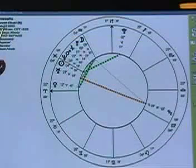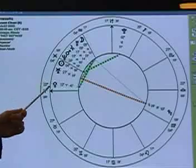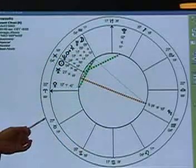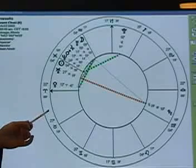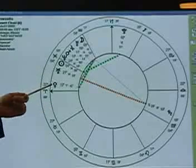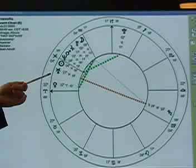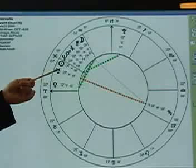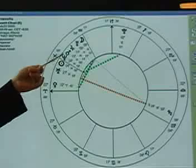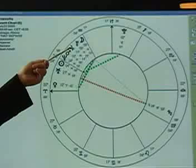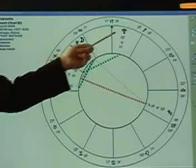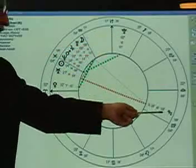We have today, on February 22nd when we're filming this, at 8:30 in the morning — this is a picture of what is exact on this day. Venus has just risen above the horizon. That's Venus, Uranus, Sun, Neptune, Mars, Jupiter, Mercury, the Moon, Pluto, and Saturn.